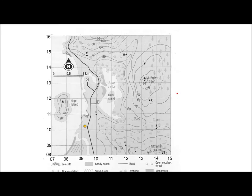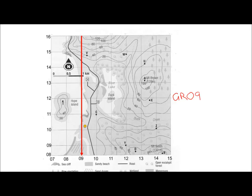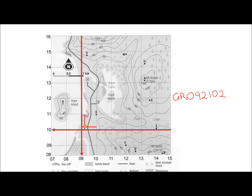The first thing we're going to do is write GR, because that tells us there's going to be 6 digits. We go across the hall to 09, and across to 9.2 — I don't write the point, so it's 092. And we go up the stairs to 10.2, giving us 102. So we've given them a 6-number grid reference of where we are. Now give that a try on a topographic map of your own.